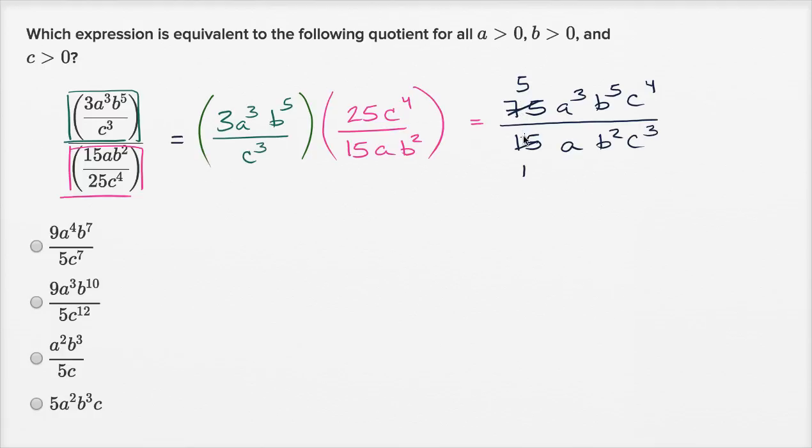So immediately, if I was under time pressure, I would just stop there and say, hey look, the only one of these choices that has only a five out front is this choice right over here. So I'm feeling pretty good about it. But I could continue to simplify.